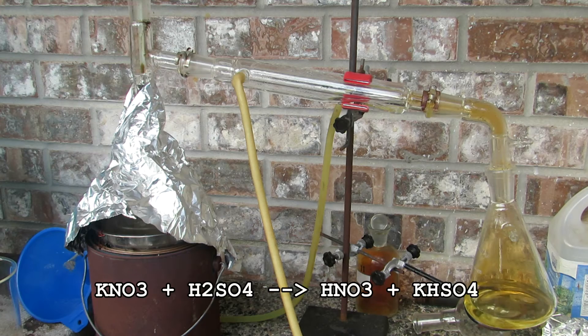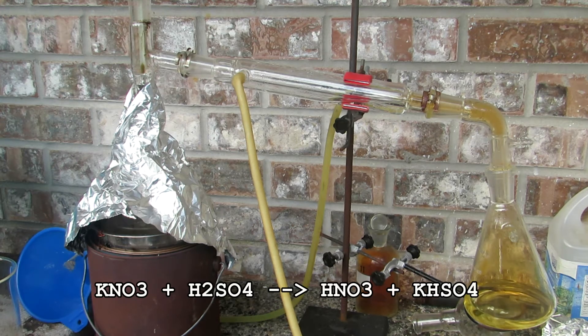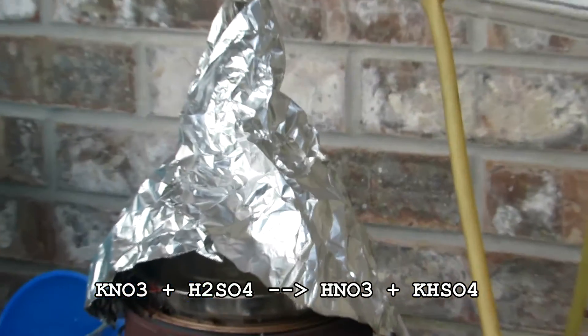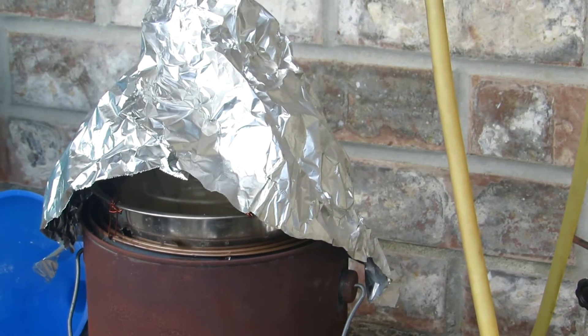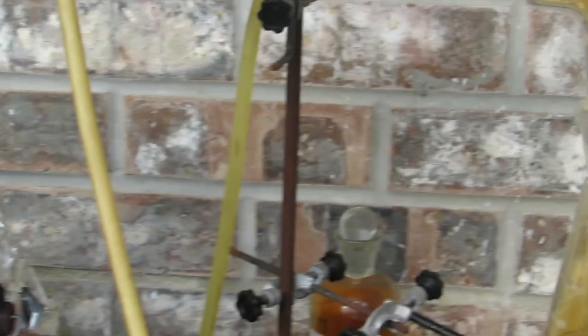As you can see, the sulfuric acid is reacting with the potassium nitrate to form the nitric acid. This is boiling around 121 degrees Celsius, and you can see we're collecting our 68% azeotrope in the flask to the right.